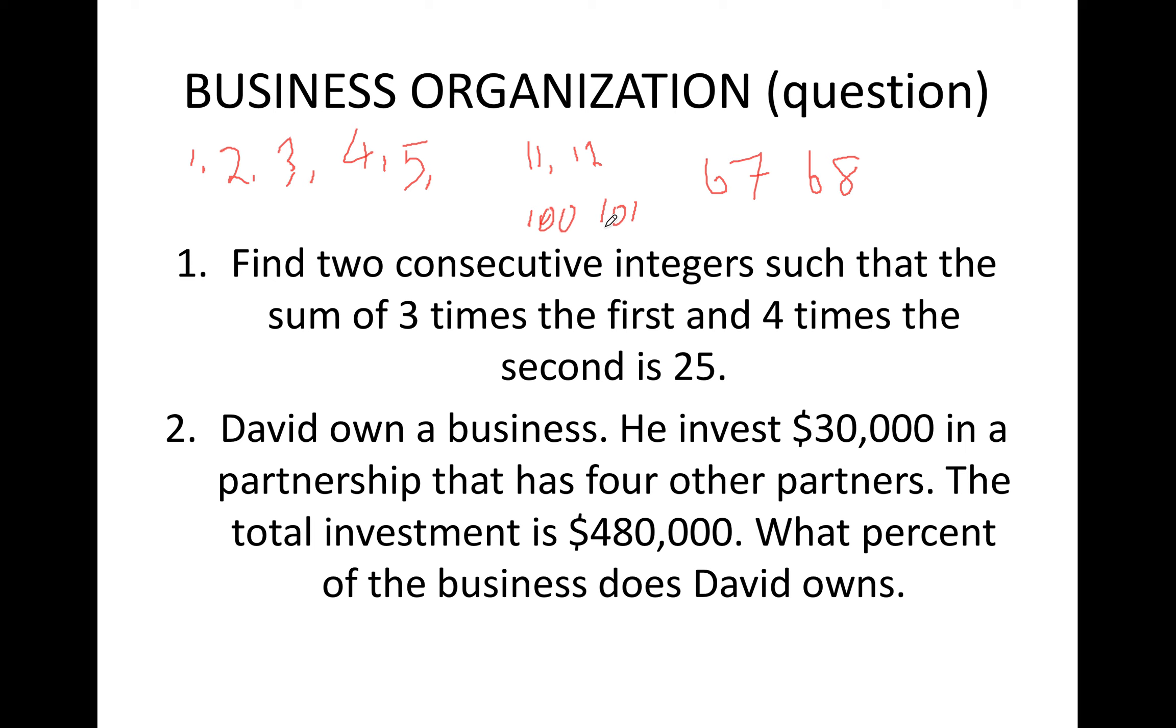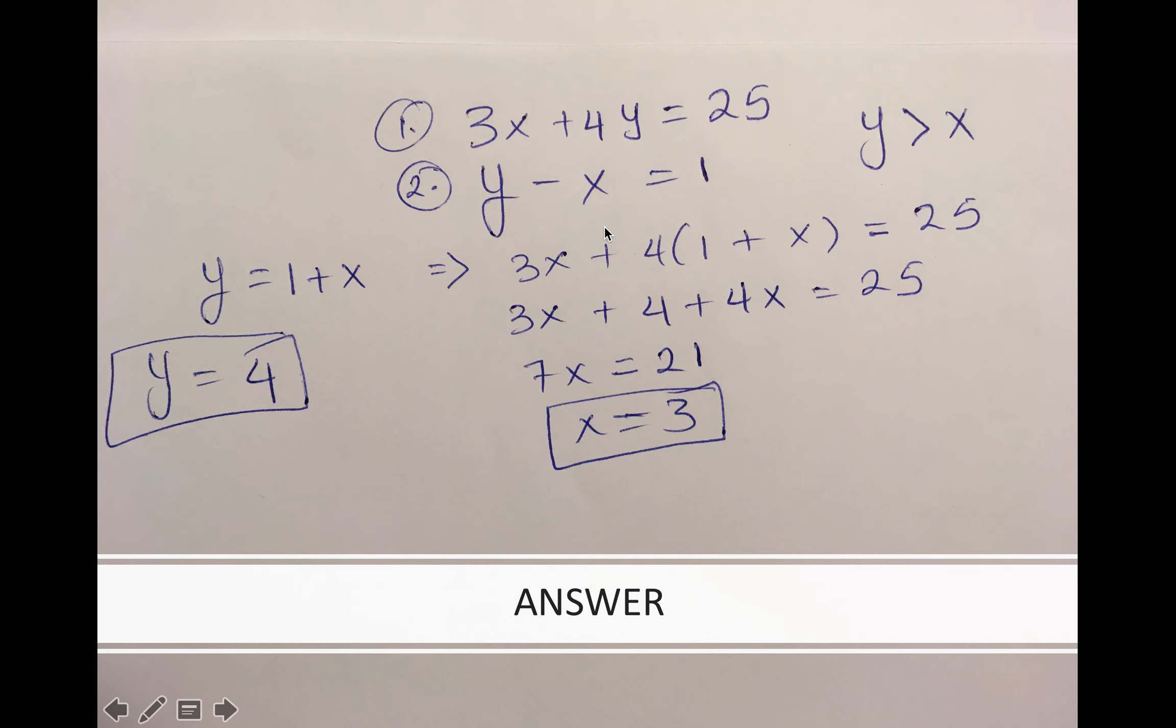Let's see how to solve this question. Here I wrote my first equation: 3x + 4y = 25. Why? Because the question says find two consecutive integers such that the sum of three times the first and four times the second is 25.